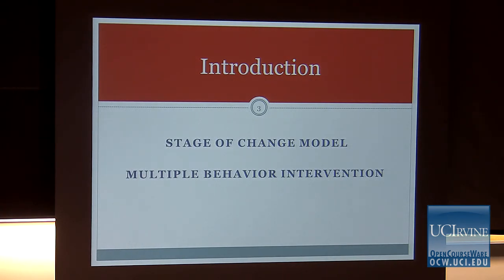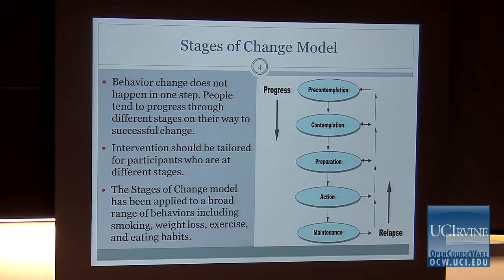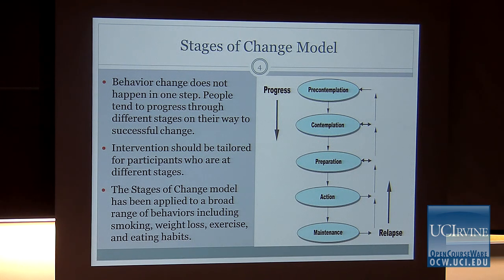The stages of change model, proposed by Prochaska and colleagues in the 1970s, states that behavioral change does not happen in one step. People tend to progress through different stages on their way to successful change, as shown in the diagram on the right panel. The model proposes that interventions should be tailored for participants at different stages, and has been applied to behaviors including smoking, weight loss, exercise, and eating habits.